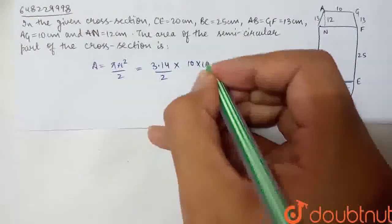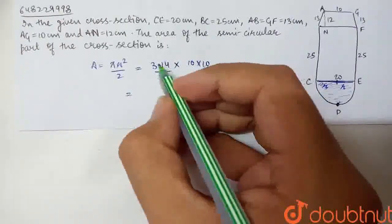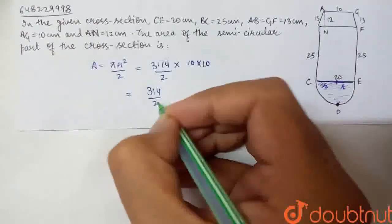So r² equals 10 × 10. Now, if we multiply, 3.14 × 10 × 10 divided by 2, that is 314 divided by 2. And we cancel out.